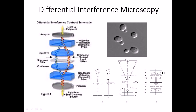Let us compare this microscopic setup with normal light microscopy. This is the light source — light comes from this source. In normal microscopy, right after the source we have the condenser, which condenses the light to the specimen slide. But in DIC, between the light source and condenser we have two additional components.